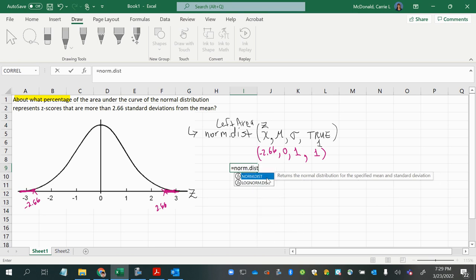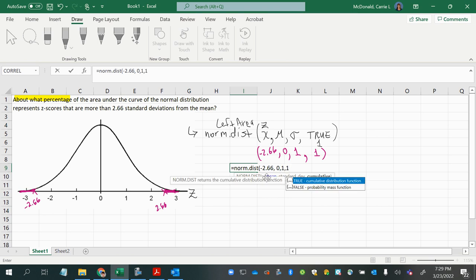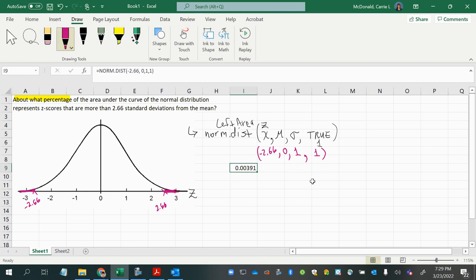So, norm.dist, negative 2.66, 0, comma 1, comma 1. Okay, so just make sure you separate everything with commas. And then press enter. And this is the area of one of the tails, each of the tails, actually. They're both equal to 0.00391.